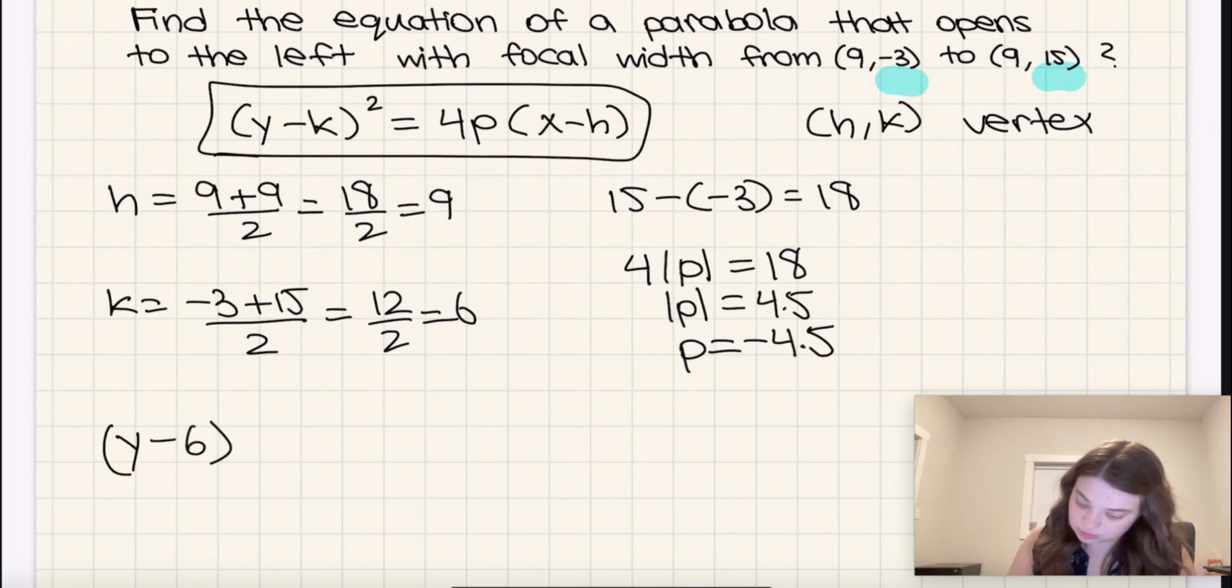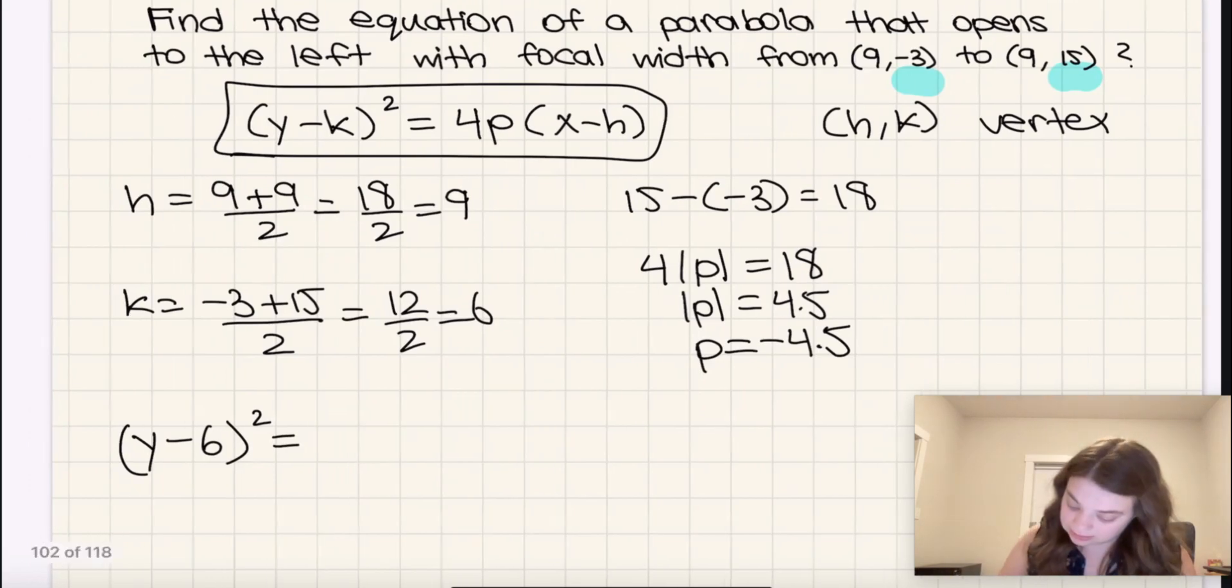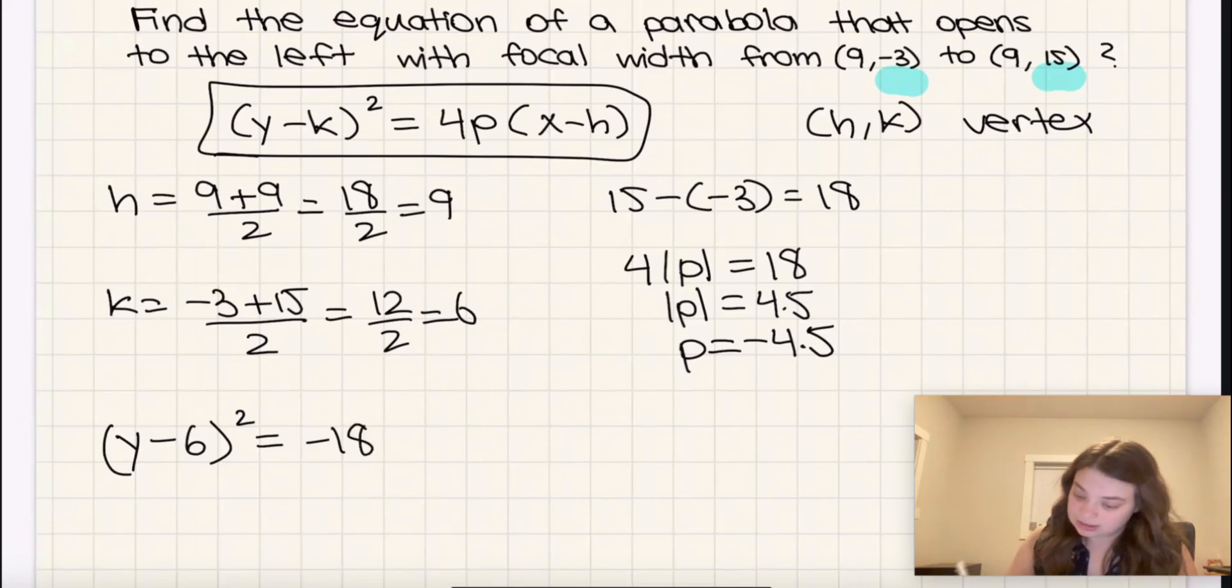So y minus k, which is y minus 6 squared, is equal to 4 times negative 4.5, which is going to be negative 18 times x minus h. So x minus 9, like that.